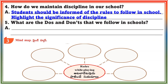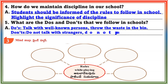Question 5: What are the dos and don'ts that we follow in schools? Answer. Do's: Talk with well-known persons, throw the waste in the bin. Don'ts: Do not talk with strangers, do not push each other while playing.